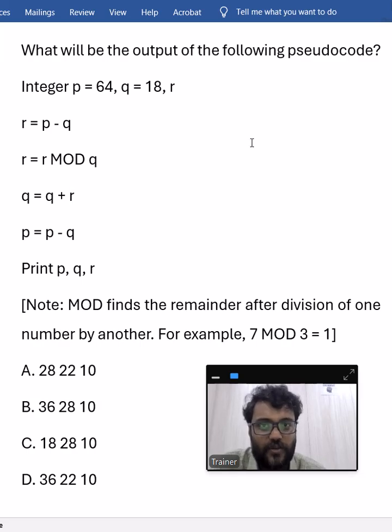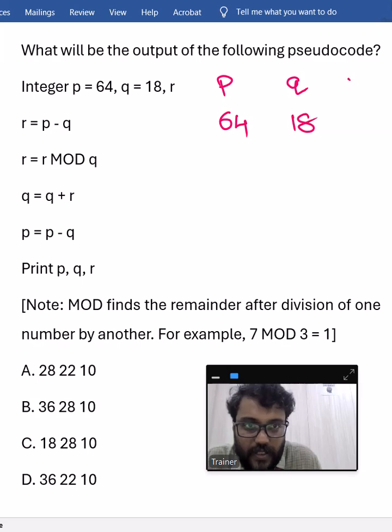Hello everyone, let us look at this pseudocode question. Here p is given as 64 and it is declared as integer, q is 18, r is declared as integer but value is not assigned.